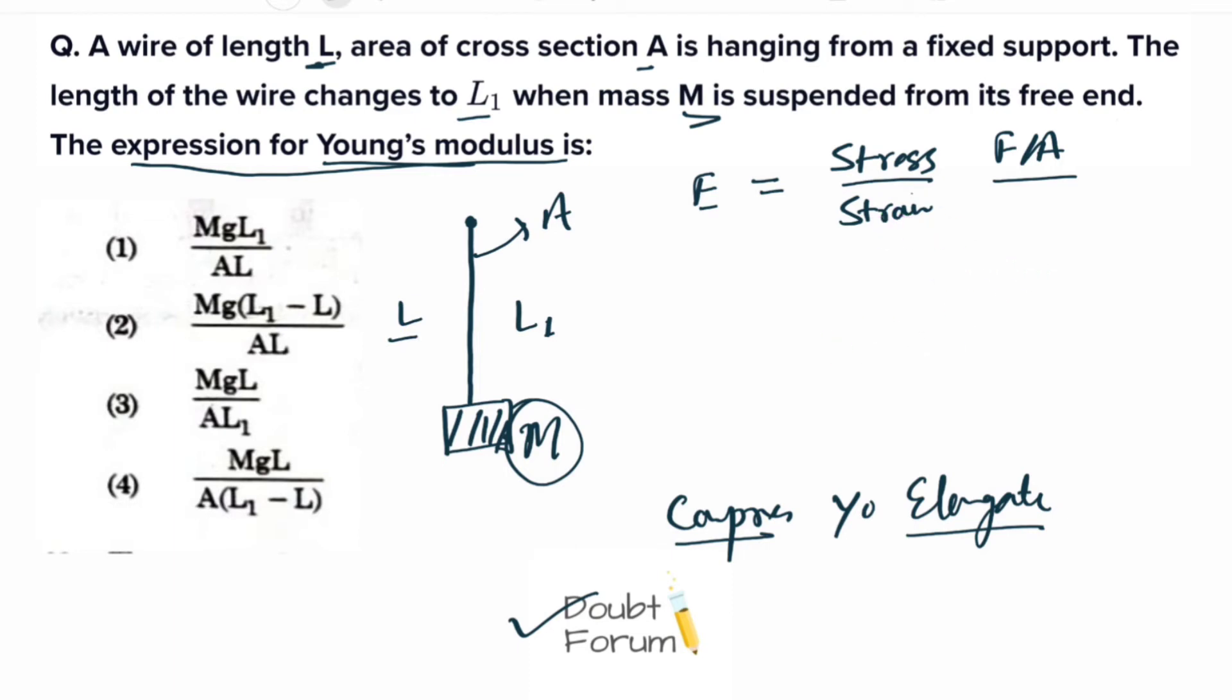So this strain will become change in length, or ΔL, divided by initial length. The initial length when the mass was not suspended was L. Now this formula for Young's modulus will become F divided by A, whole divided by ΔL upon L.